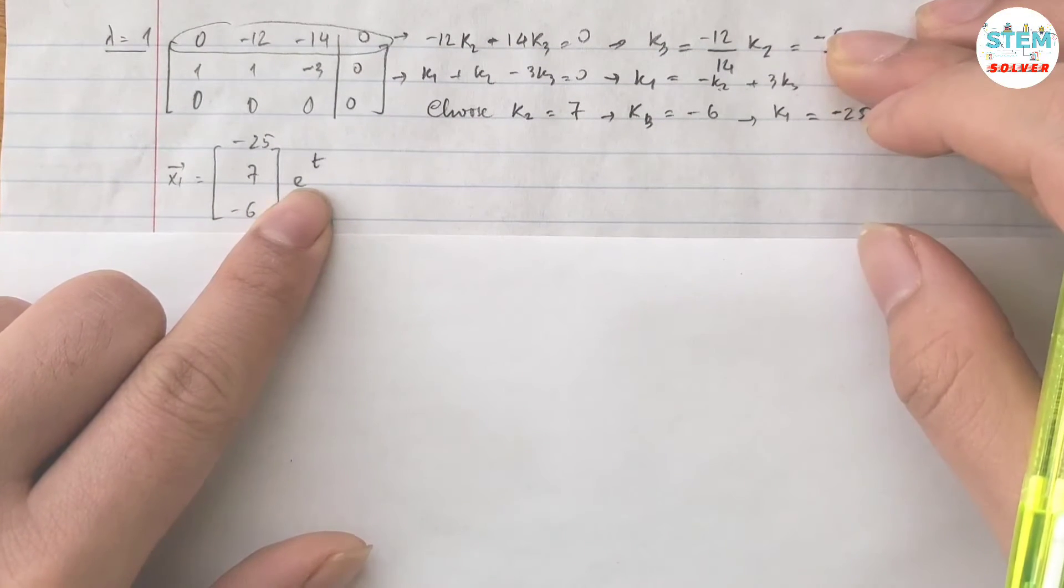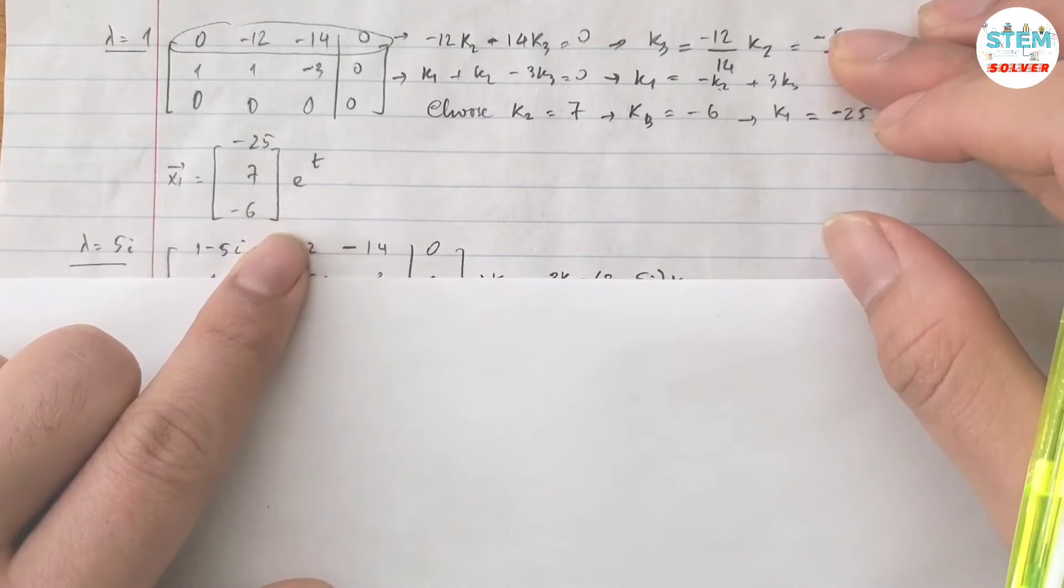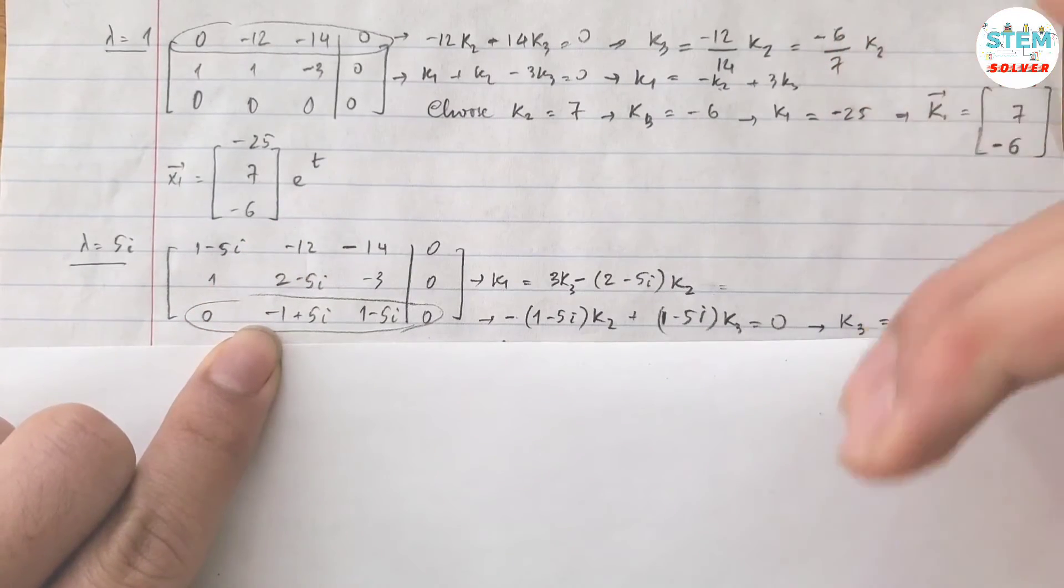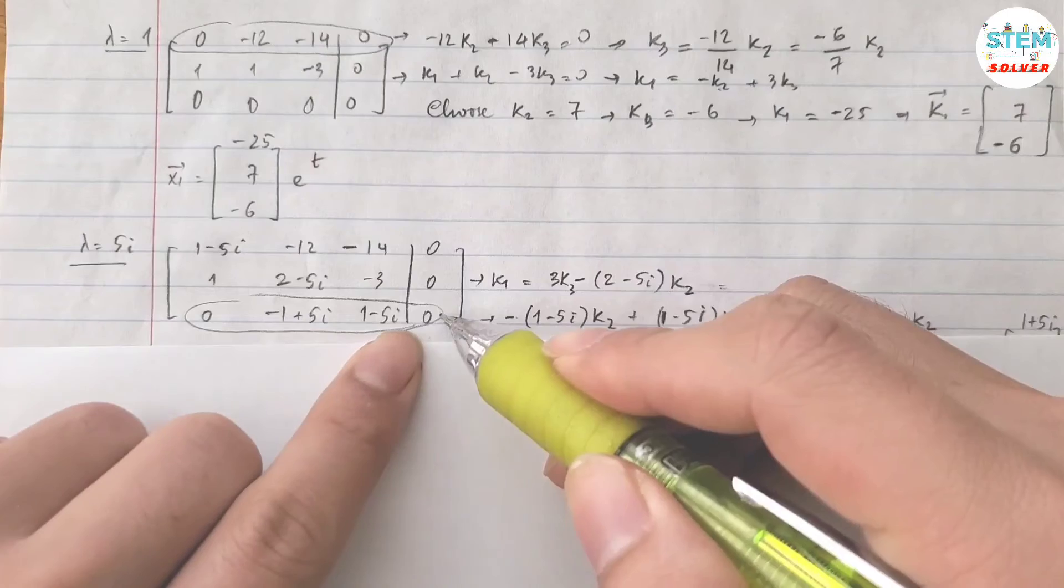Now you are going to do the same thing for lambda equals positive five i. Plug it into A minus lambda I, that gives you this matrix augmented with zero.